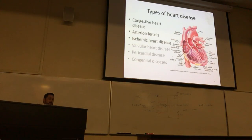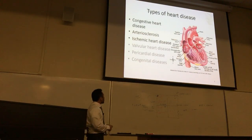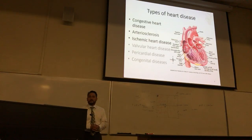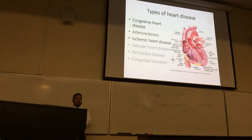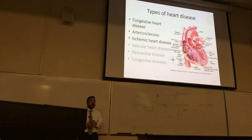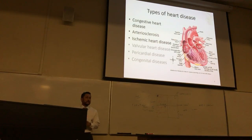The types of heart disease we're going to cover — the five or six big ones — are: congestive heart disease, arteriosclerosis, ischemic heart disease, valvular heart disease, pericardial disease, and then congenital disorders.